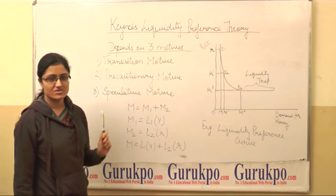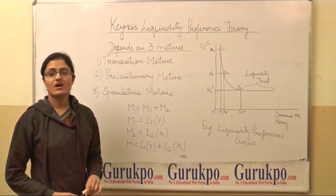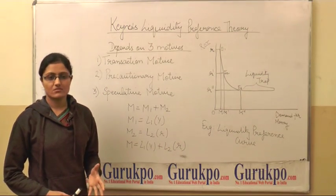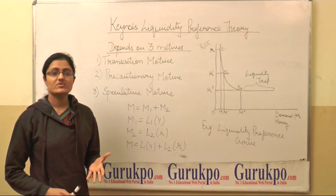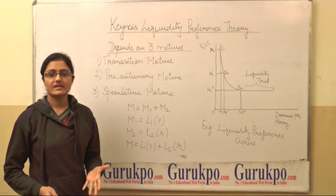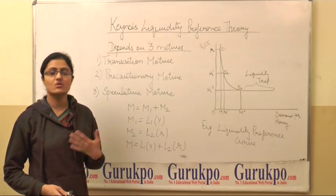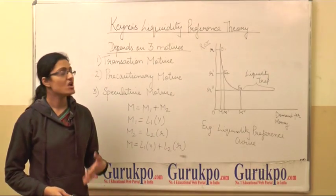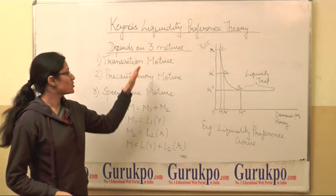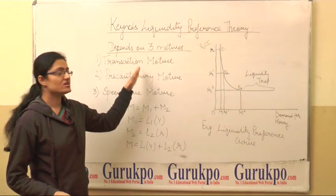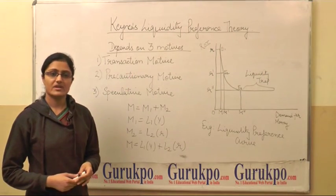First is transaction motive. Under this motive, the demand for money depends upon the level of income. Basically, it is the money which we need for our daily exchange purposes, because we receive our income on a monthly basis. So we need some money for our day-to-day expenses. Under this motive, the demand for money depends upon level of income.